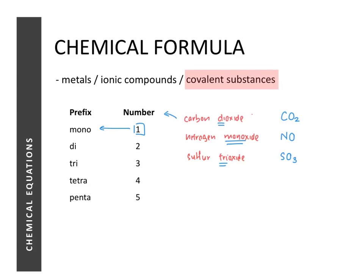To summarize this lesson: we learned what chemical equations are and the key features to look out for — reactants, products, state symbols, and coefficients. We then did a quick revision of writing chemical formulas for different types of substances: metals, ionic compounds, and covalent substances.